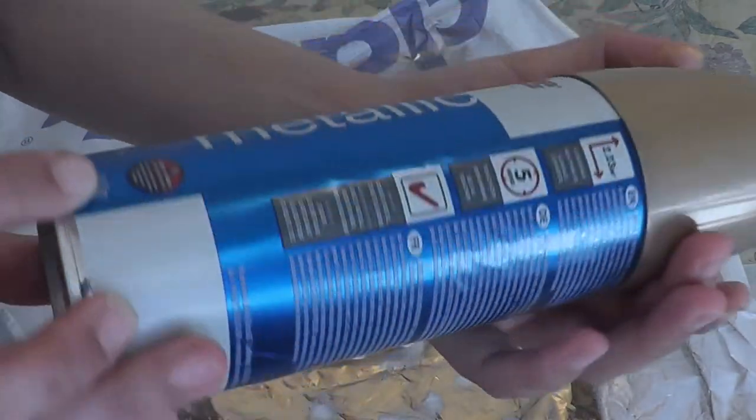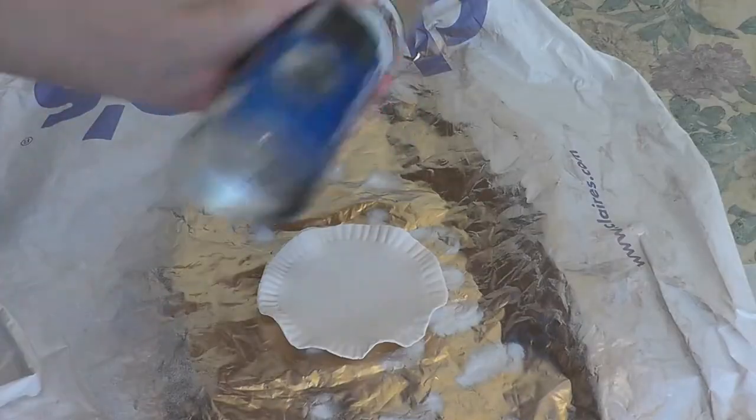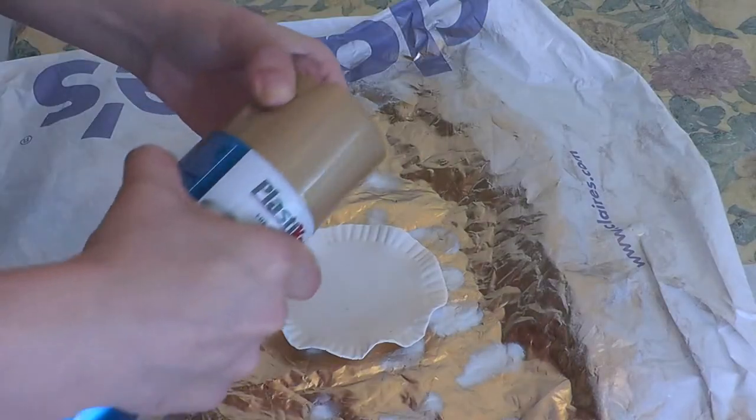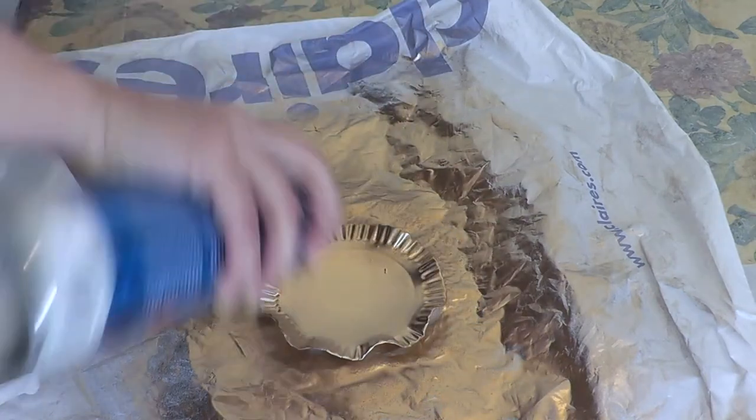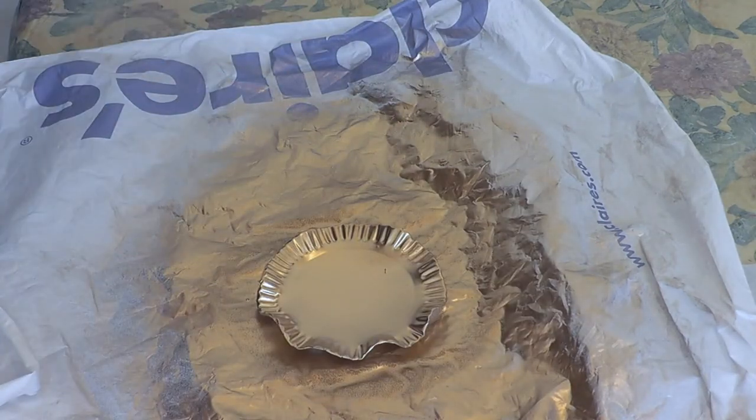Then grab the metallic gold spray paint. And before use, don't forget to shake it well. Take off the lid. See the spray jet. Spray this paint all over the platter. When it's evenly covered with paint, let it dry for 1-2 hours.